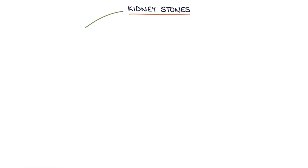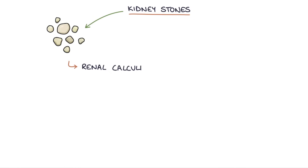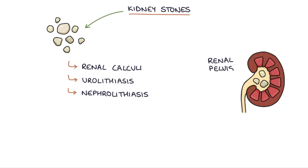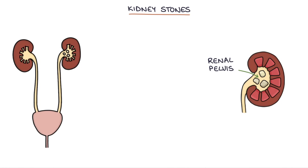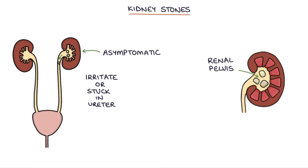Kidney stones are also referred to as renal calculi, urolithiasis, and nephrolithiasis. They're hard stones that form in the renal pelvis where the urine collects before it travels down the ureters. Kidney stones may be asymptomatic until they irritate or get stuck in the ureters, most often at the vesico-ureteric junction, which is the junction between the ureter and the bladder.